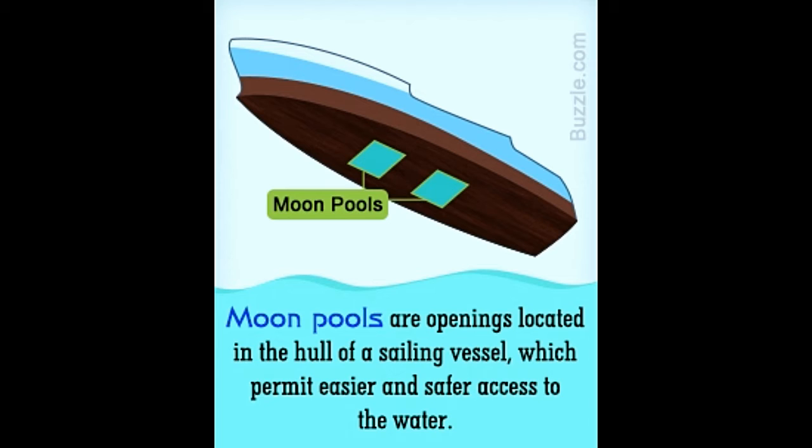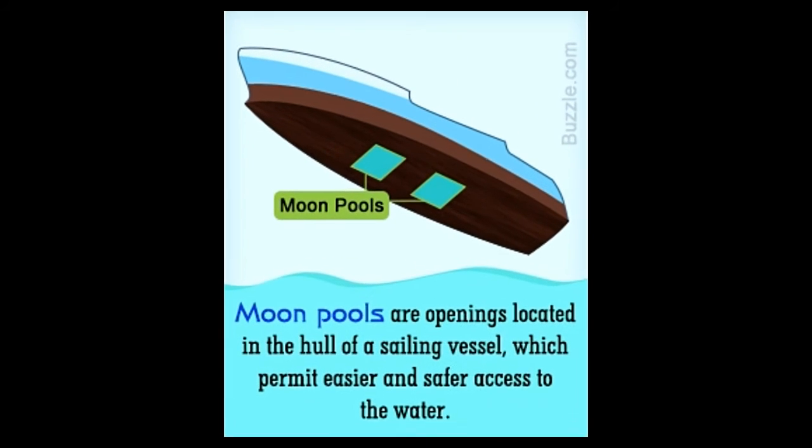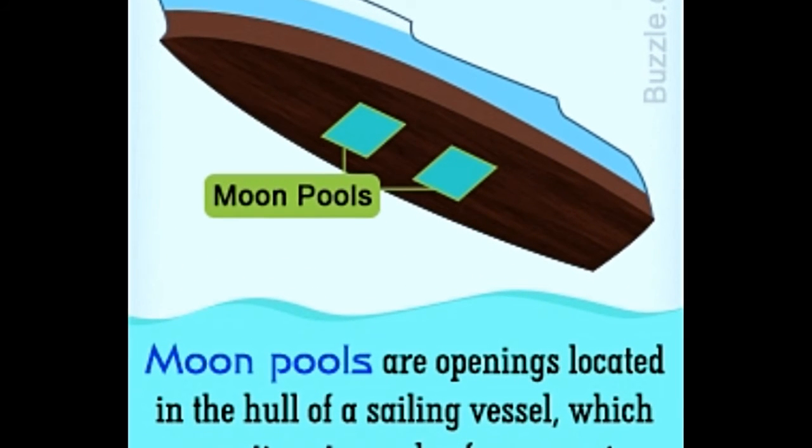What is a moon pool? A moon pool is an opening located at the floor or hull of a sailing vessel, which is used for gaining easier and safer access to the water below. It is used by sailors, divers, researchers, marine biologists, etc., for entering the water easily.